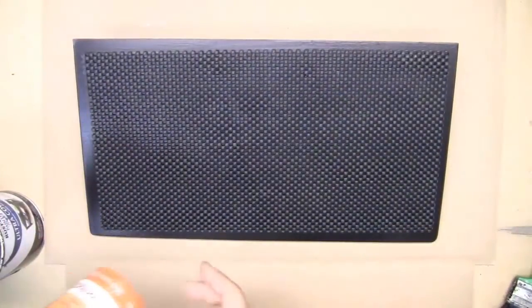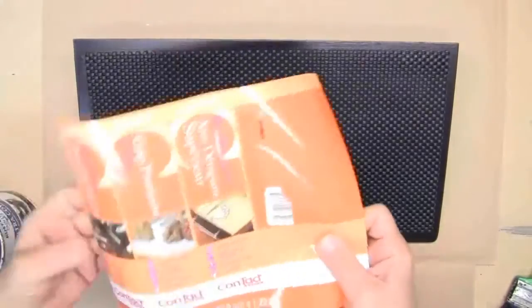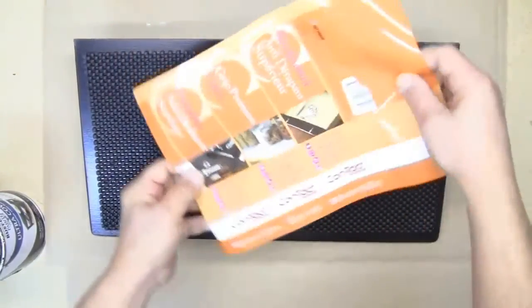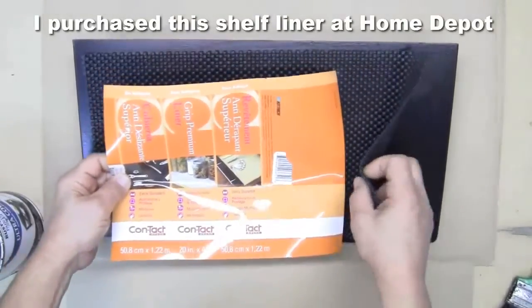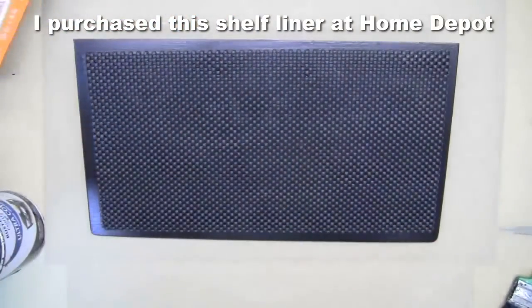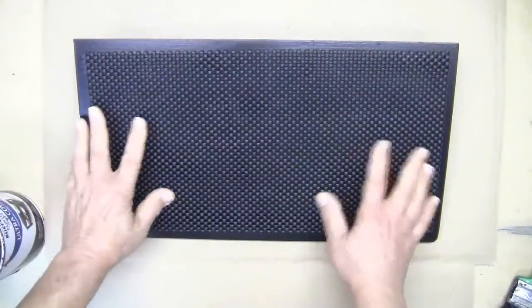And the approach uses this common household product. It's Grip Premium Liner by Contact Brand. It's essentially a shelf surface, doesn't have an adhesive on it, but it does a really good job of keeping the keyboard from doing things that you wouldn't want it to do when you're on stage.